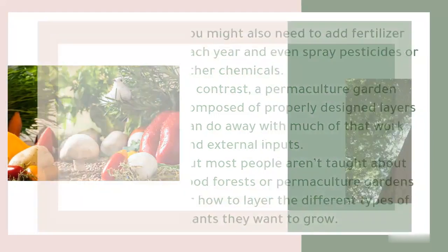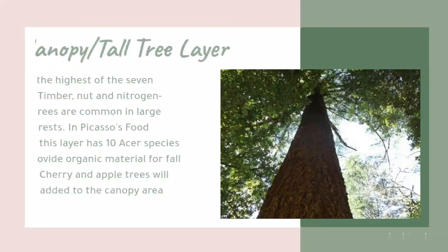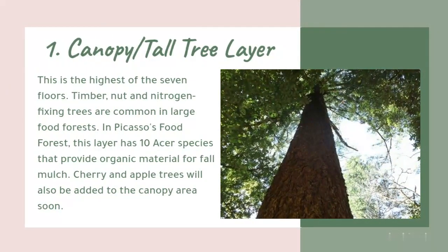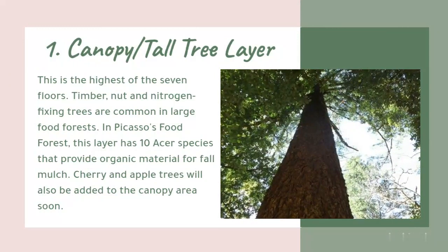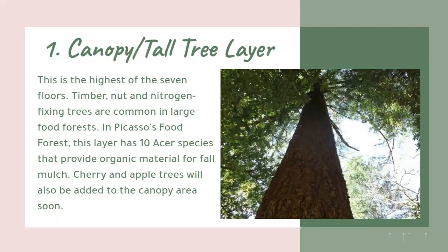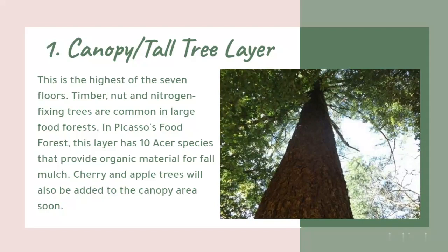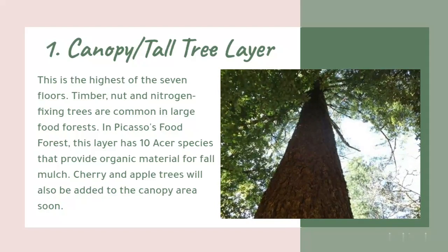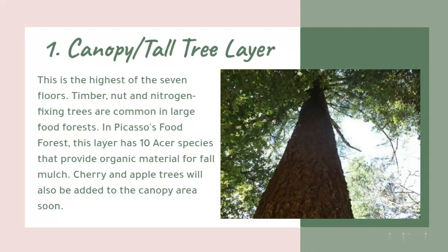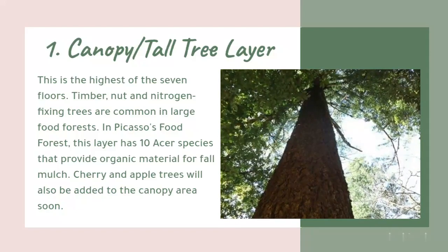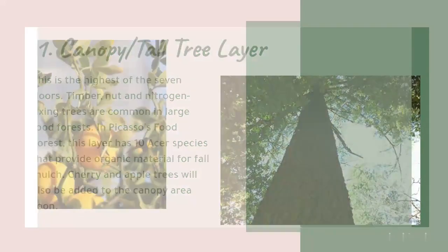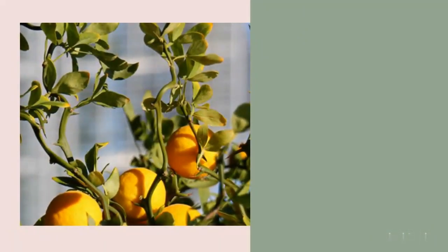Layer 1: Canopy or tall tree layer. This is the highest of the seven layers. Timber, nut, and nitrogen-fixing trees are common in large food forests. In this food forest, this layer has 10 acer species that provide organic material for fall mulch. Cherry and apple trees will also be added to the canopy area soon.